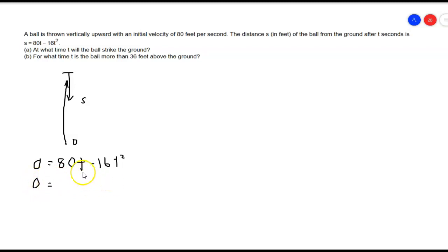I can factor out a t, and I can also factor out 16. So I'm going to have 16t, and that's going to leave me with 5 minus t. These are our two solutions. We'll get our two solutions by using these two factors.